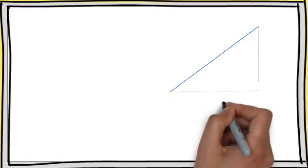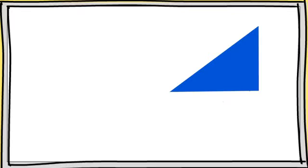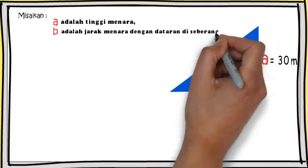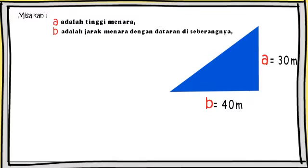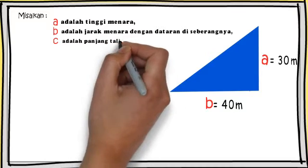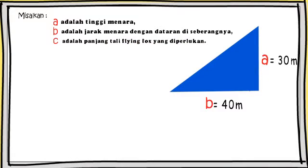Sekarang kita kerjakan bersama-sama. Yang pertama-tama, kita buat dulu bentuk lain dari flying fox-nya. C adalah panjang tali flying fox yang diperlukan, dengan panjang C belum diketahui.